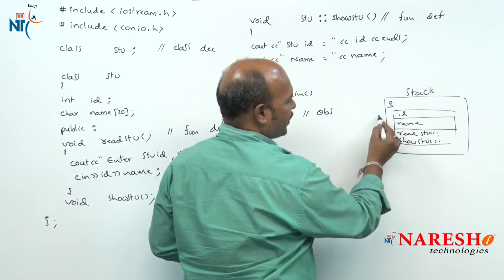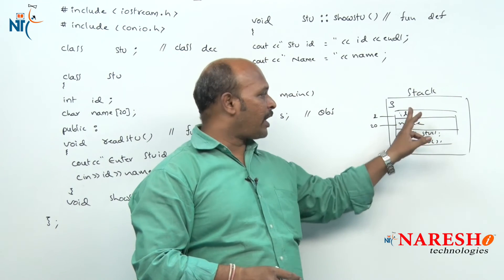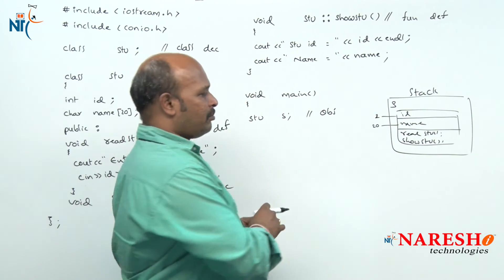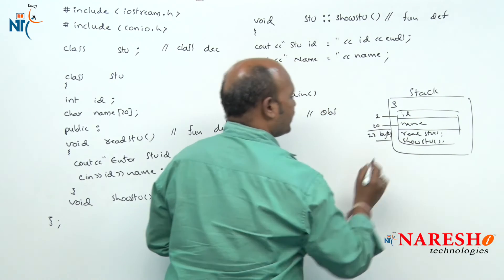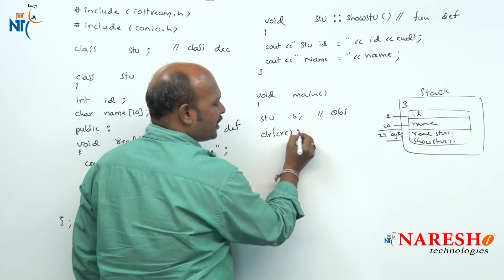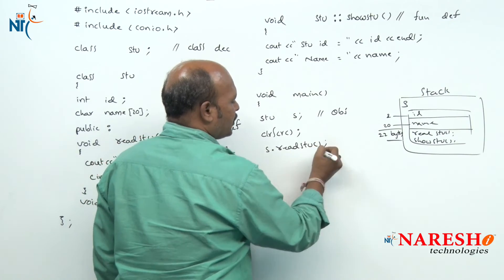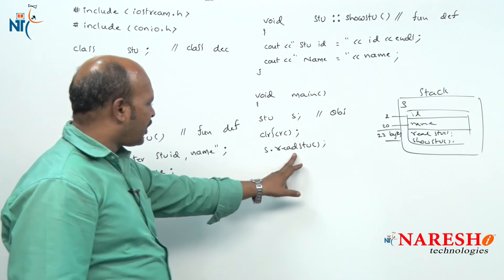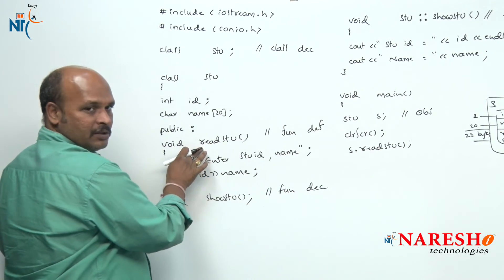The memory allocated is 2 bytes for id and 20 bytes for name. The data members are id and name; to access them we use read_student and show_student. So 22 bytes of memory are allocated for this object. Now we call read_student: clrscr, then s.read_student. The read_student function is invoked, and since its body is defined inside the class, compilation moves there.